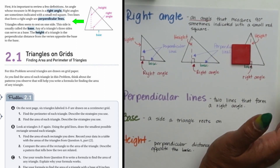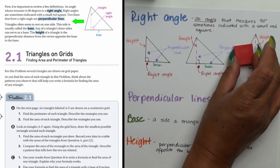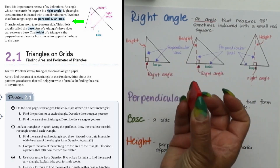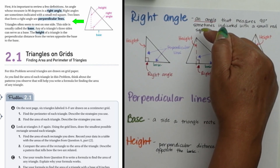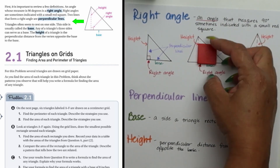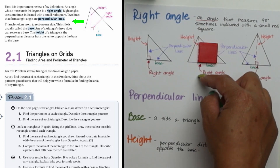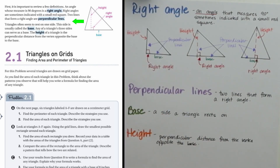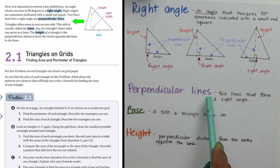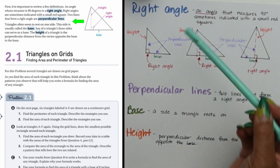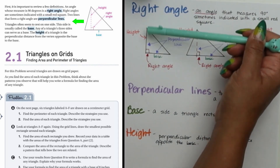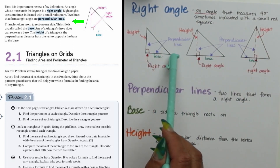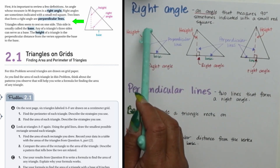Right angles are important when finding the height of a triangle in order to find the area. You locate the height by finding the top vertex and drawing a straight line that creates a 90-degree angle to the base — that's your height. Perpendicular lines are two lines that form a right angle — here's a perpendicular line from vertex to base forming those two perpendicular lines.